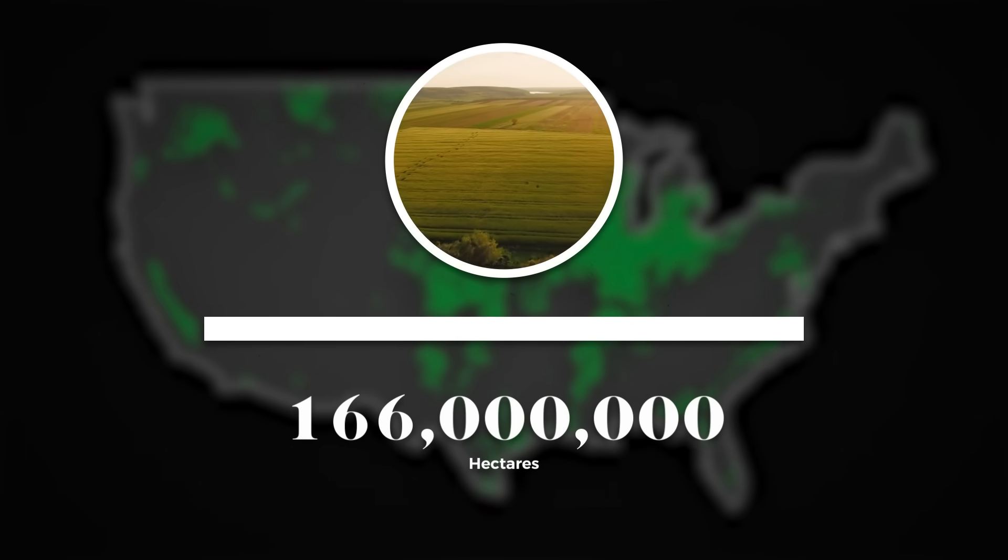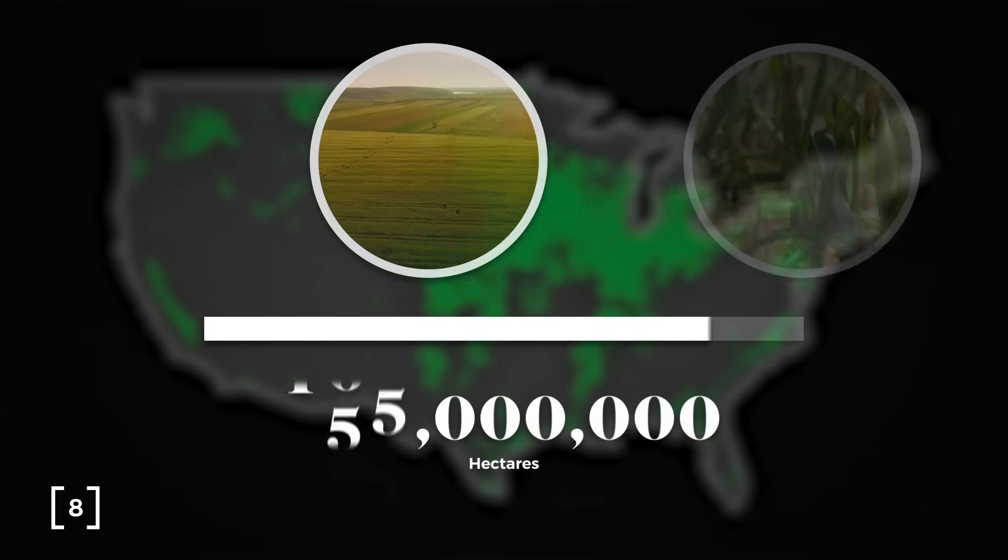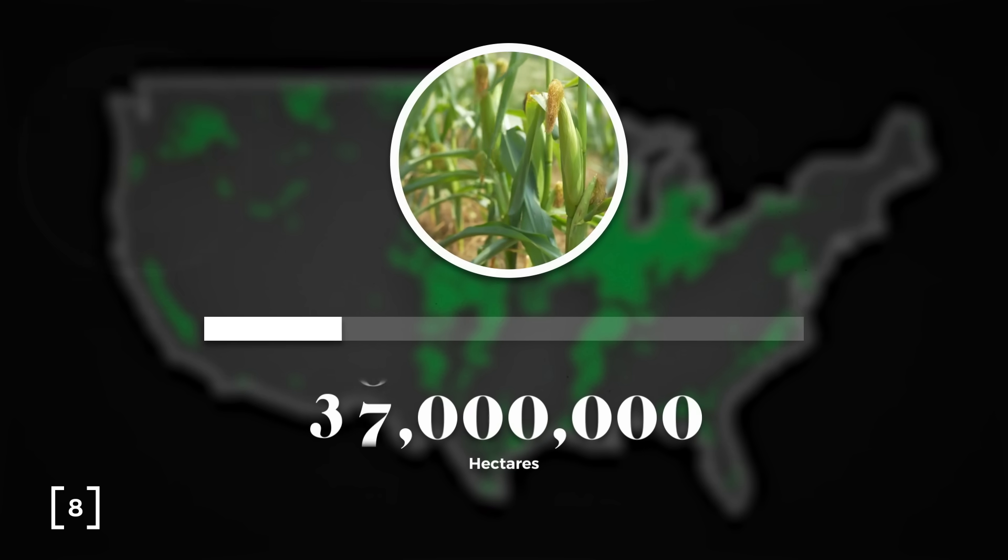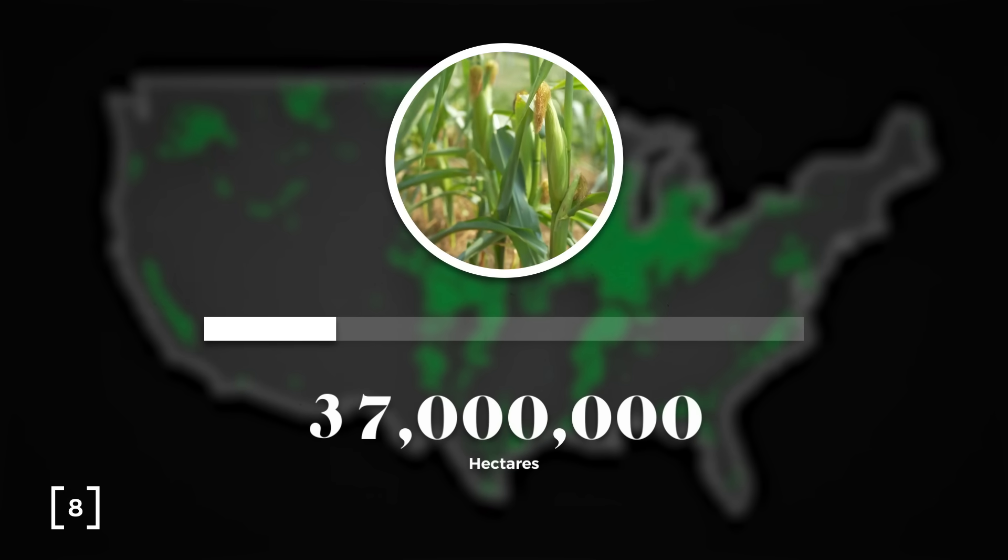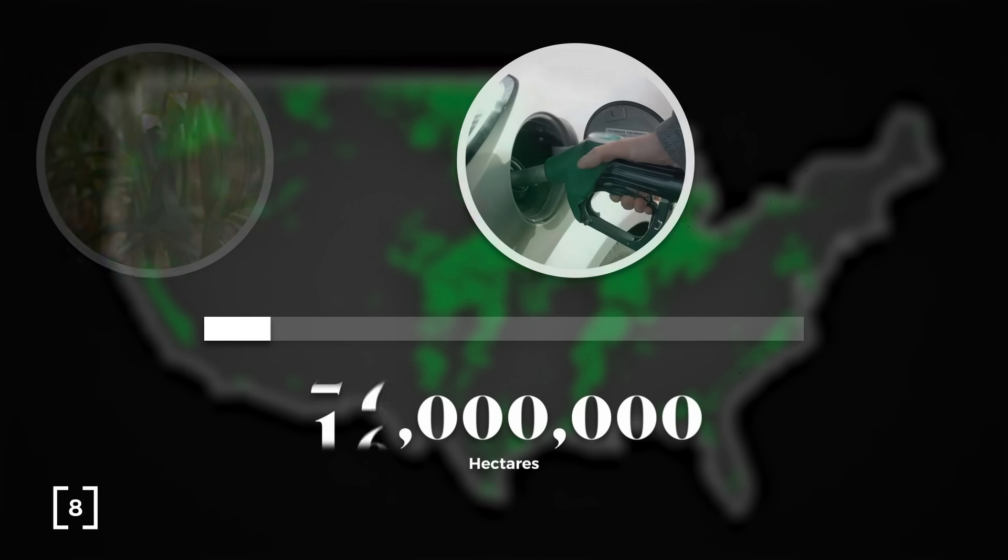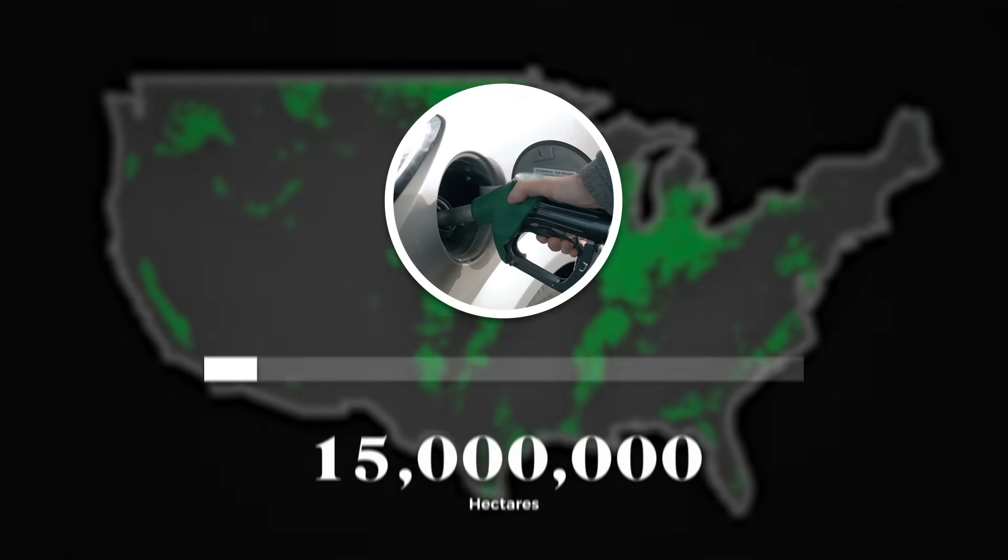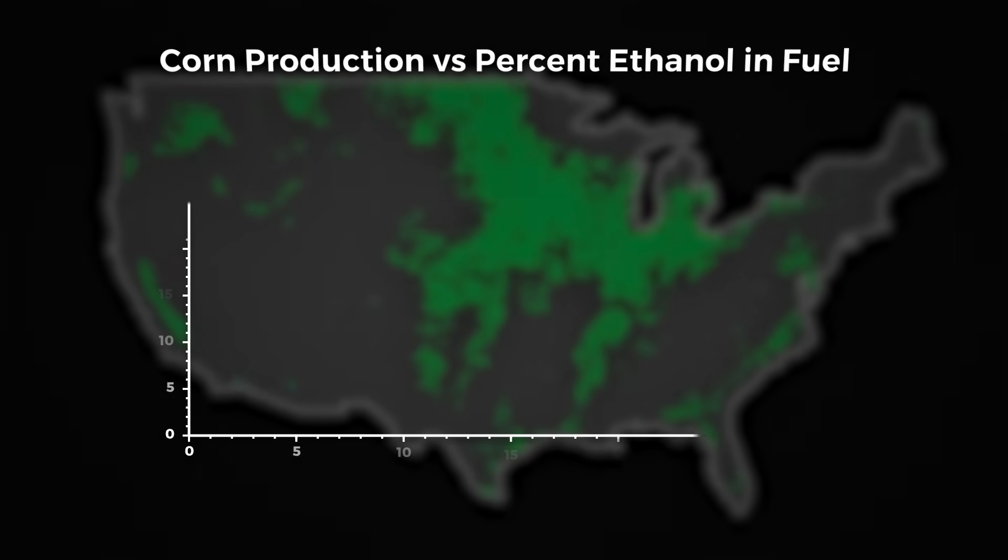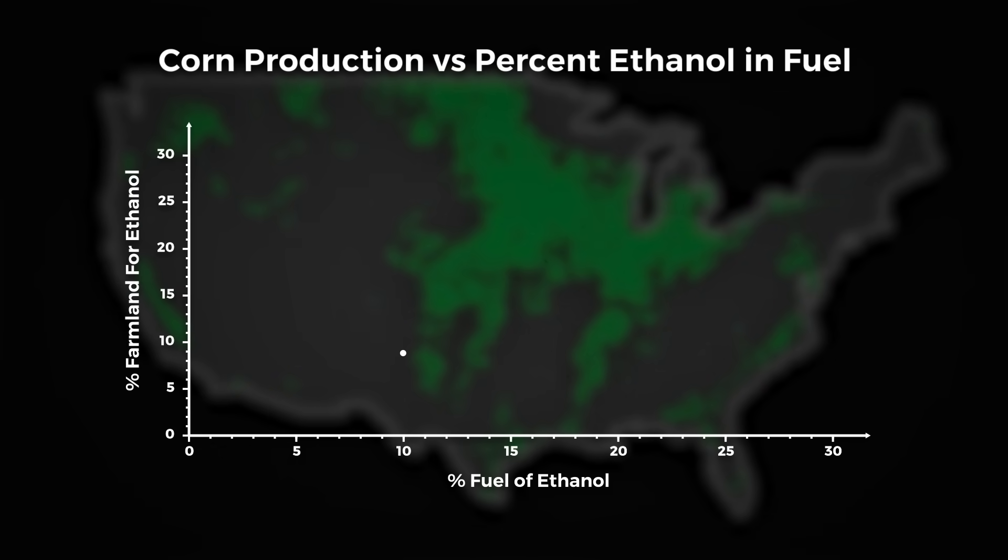This map is super interesting. The green area totals about 166 million hectares. 22% of that land area, about 37 million hectares goes to corn and 40% of that corn goes to make bioethanol. So 8.8% of this map is going to make ethanol to provide just 10% of the fuel that fills American fuel tanks.